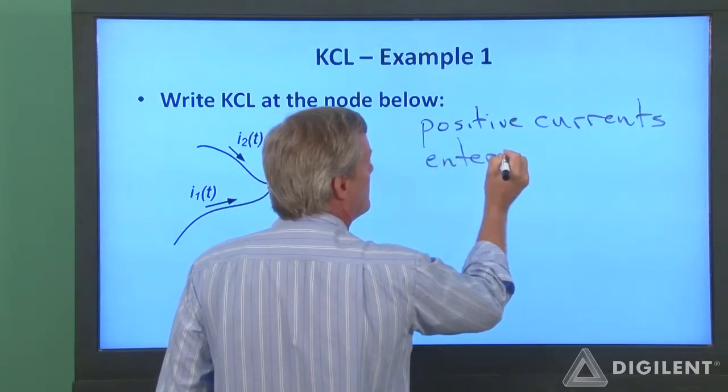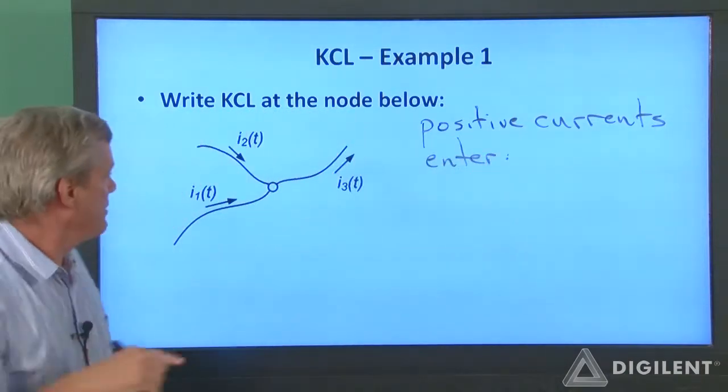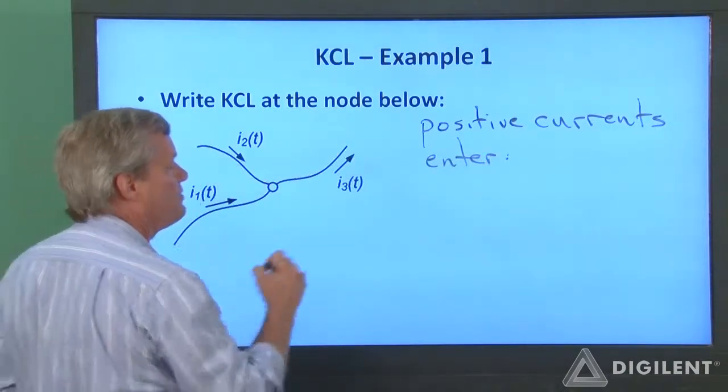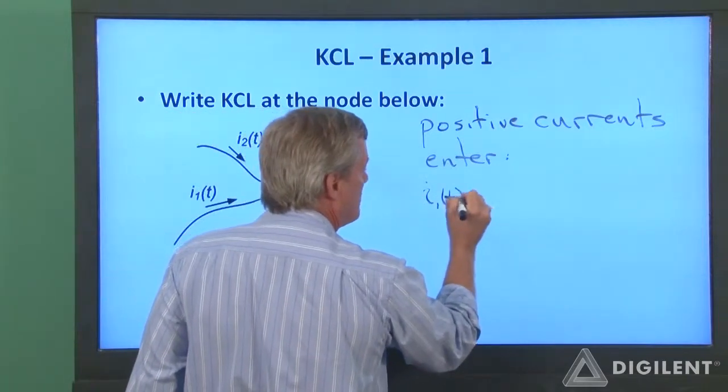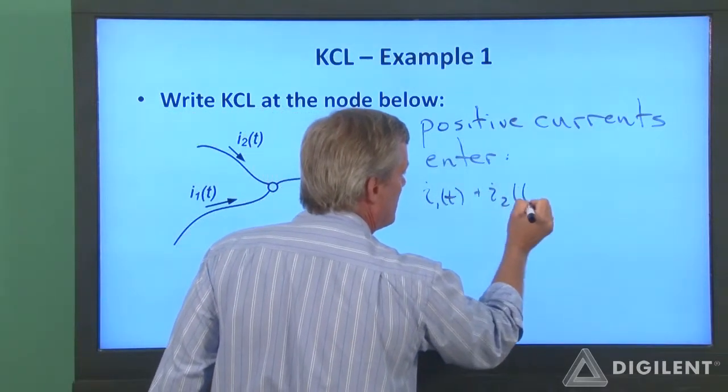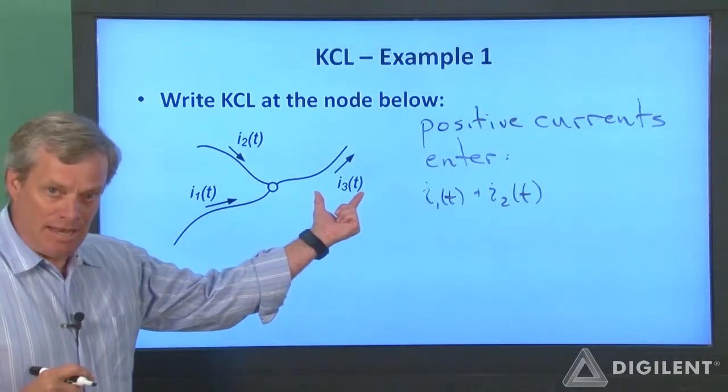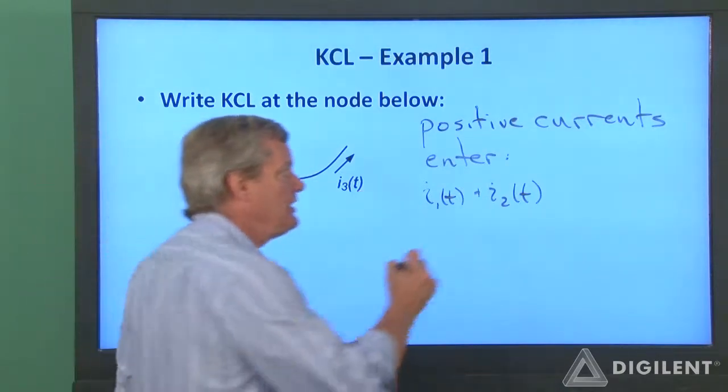If positive currents are entering, then I1 of t and I2 of t are both positive. I3 of t is negative because it's actually leaving.